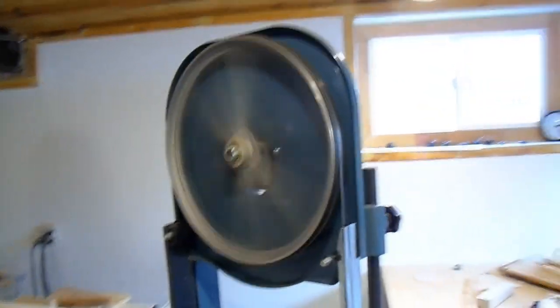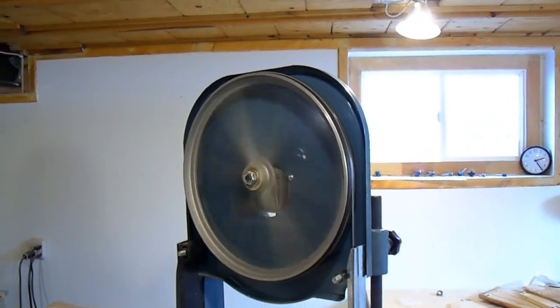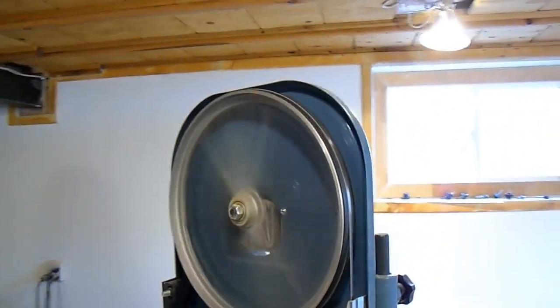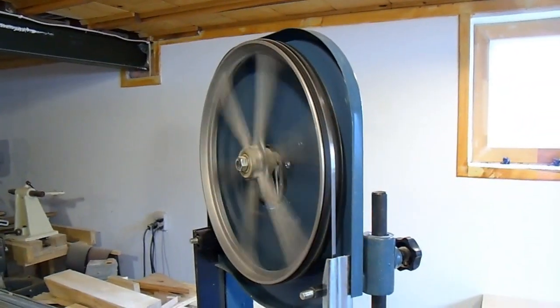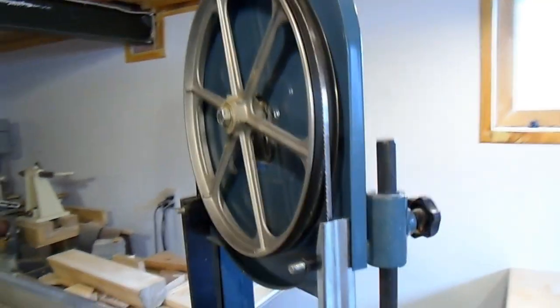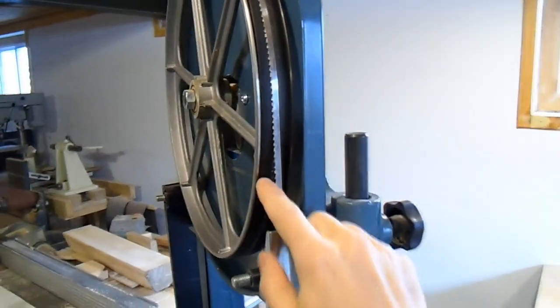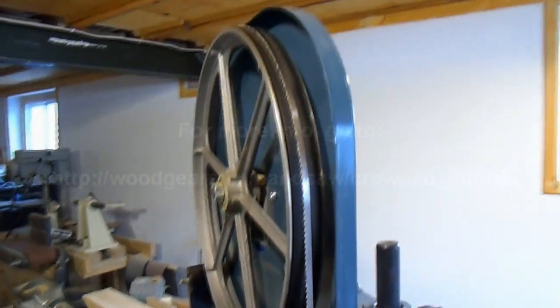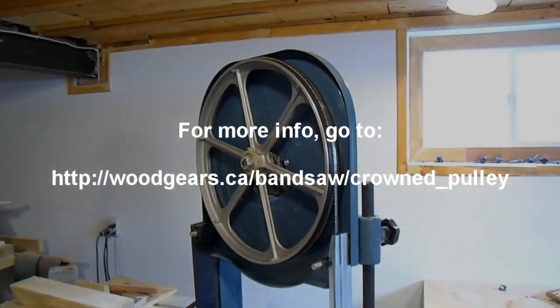I've actually seen a bandsaw mill that had no blade guides and just relied on the tracking of the crowned pulleys to keep the blade aligned. In fact, the blade had teeth on either edge. So this tracking can actually hold quite a lot of force.